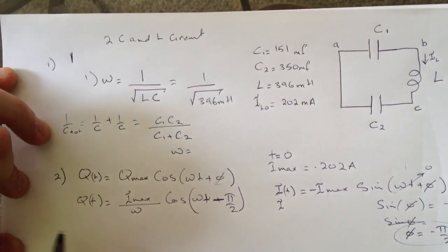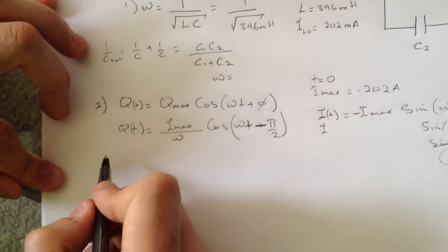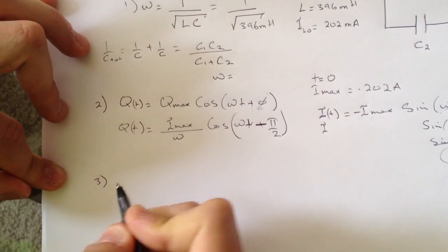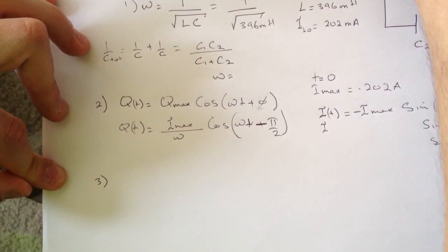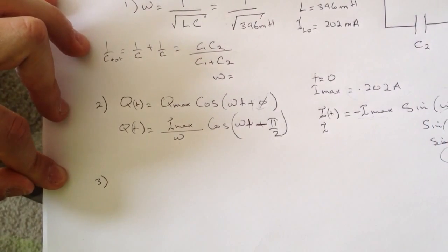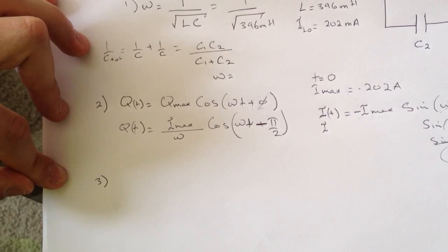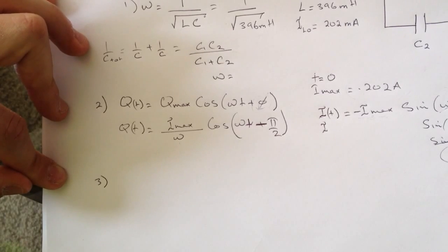The third question is asking what is V_BC at time equal one, which is the voltage across the inductor at time equal 23.7 milliseconds. They're asking about that.